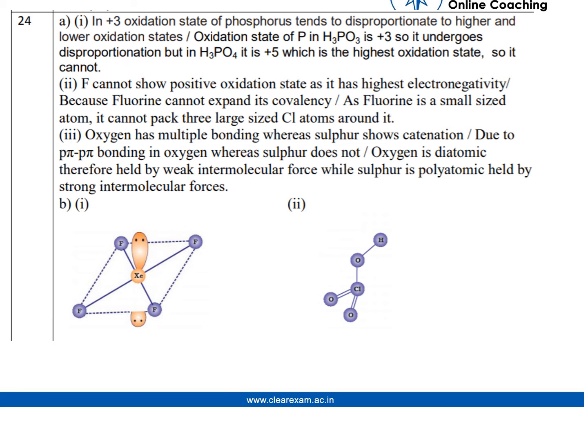For the first question, it was given that H3PO3 undergoes disproportionation reaction but H3PO4 doesn't. The reason is: in +3 oxidation state of phosphorus, it tends to disproportionate to higher and lower oxidation states. The oxidation state of P in H3PO3 is +3, so it undergoes disproportionation.